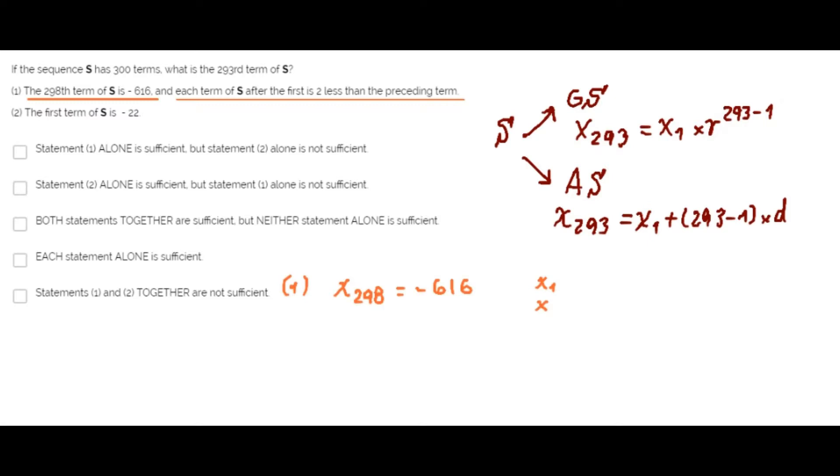So S has a first term, the second term is 2 less than the first term, the third term is 2 less than the second term, and so on. This means that sequence S is an arithmetic sequence.